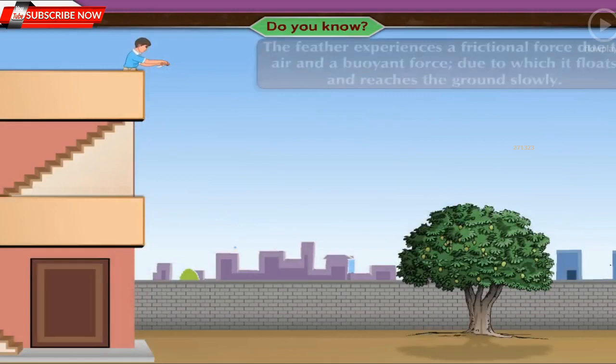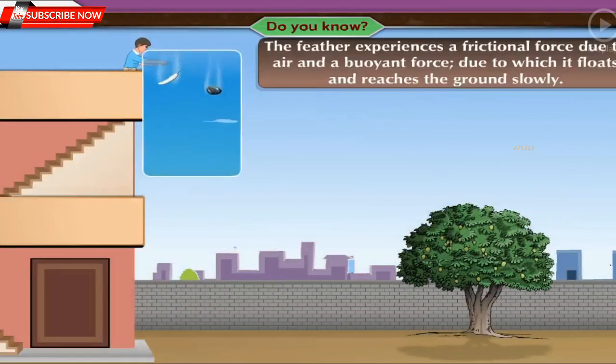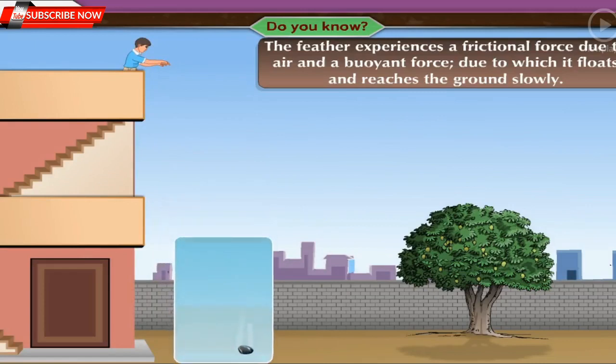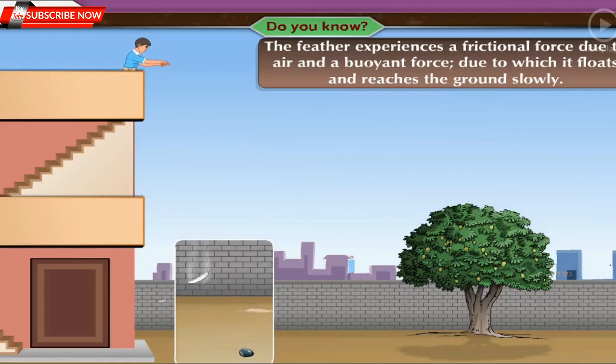This happens because the feather experiences a frictional force due to air and a buoyant force, due to which it floats and reaches the ground slowly, later than the heavy stone.